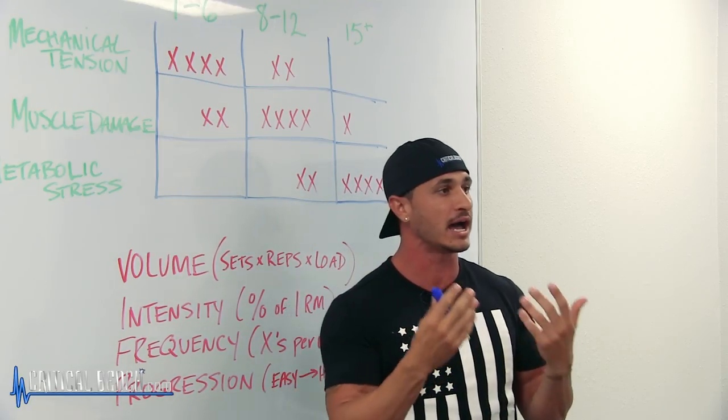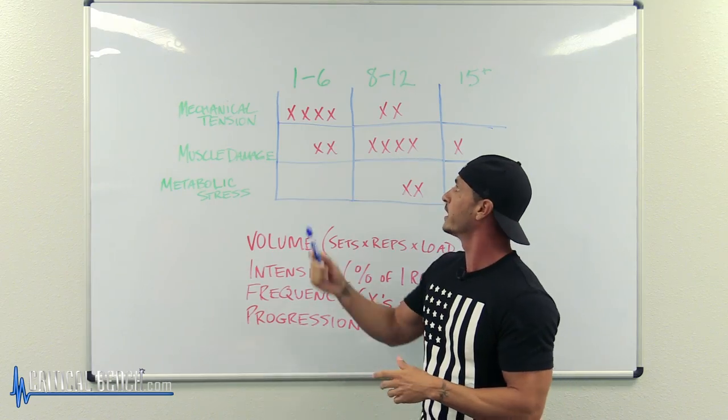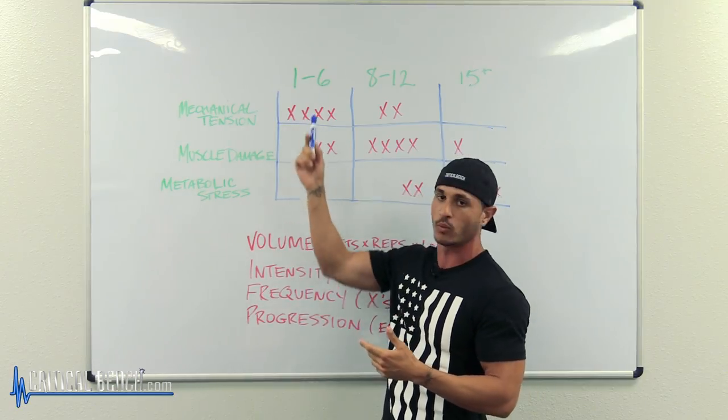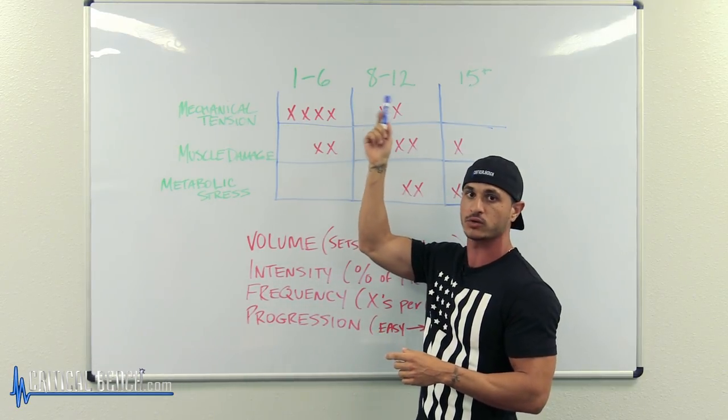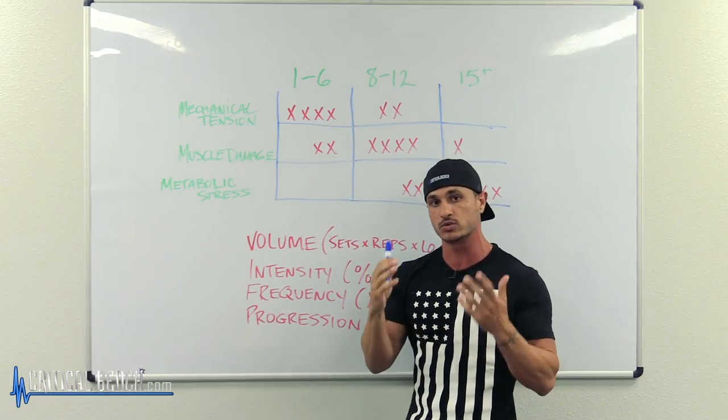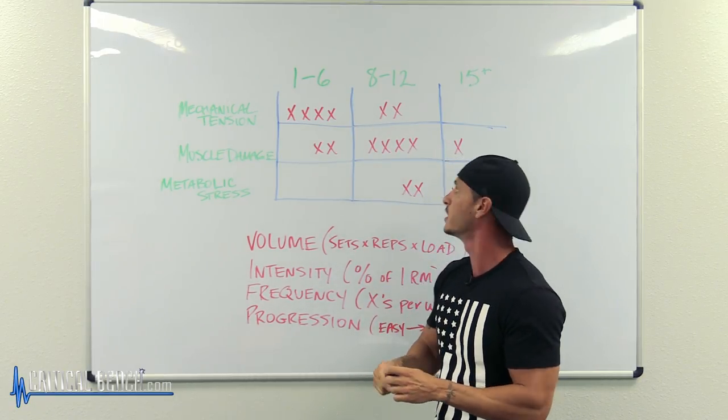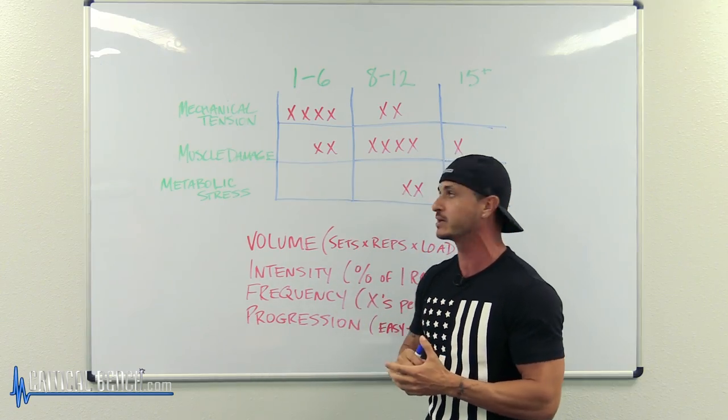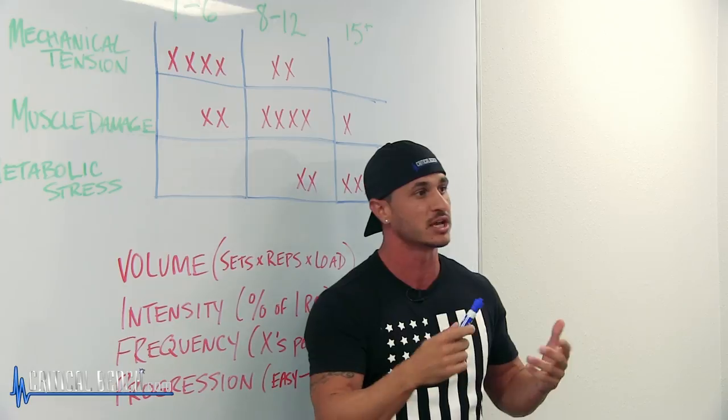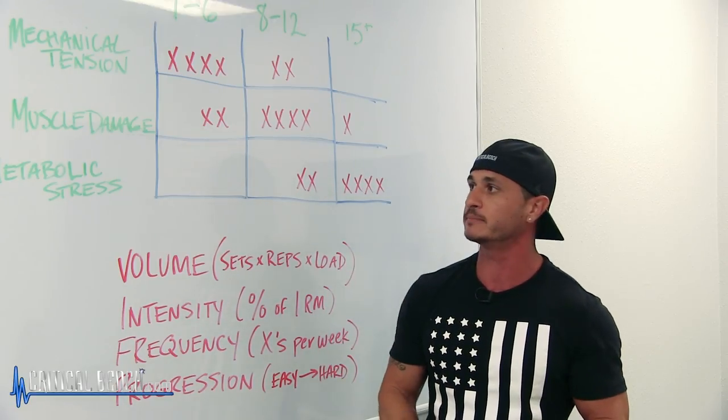We'll start with mechanical tension. This is what happens when we train with a heavy load or a high intensity. For this, typically will happen in the one to six rep range, but you will get some mechanical tension as you get into the 8 to 12 rep range, but you won't get much any further than that because at that point the intensity is just not high enough.